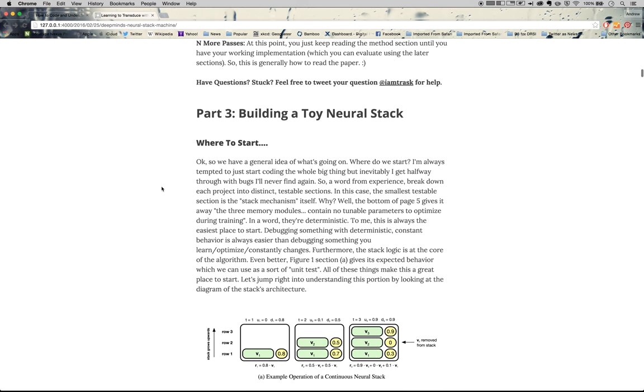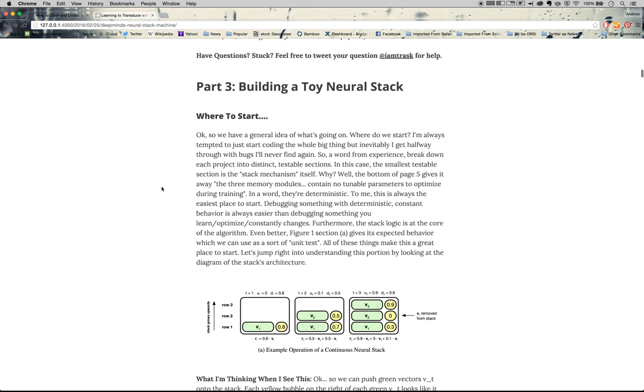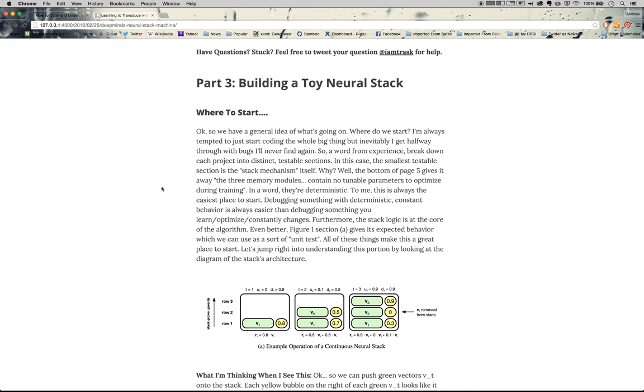All right, everyone. Welcome back to part three of DeepMind's Neural Stack paper, kind of blog post and overview and implementation. This is part three, where we're actually going to build a toy Neural Stack and discuss how the parts work together and how it works. The cool part is that we'll get one working by the end of this section. So let's jump right in. We've got a lot to cover.